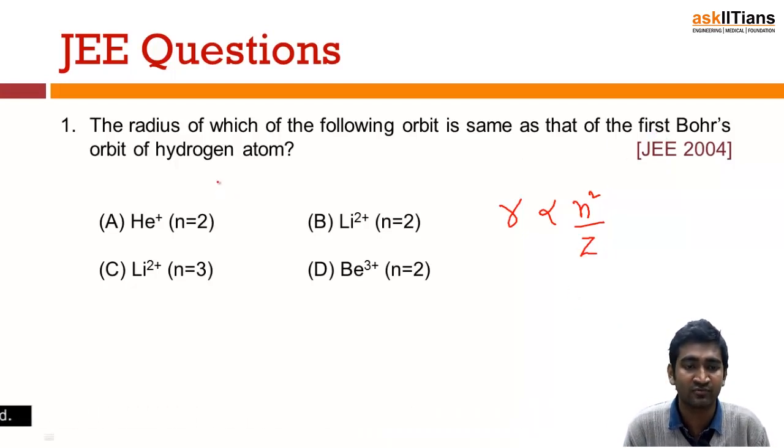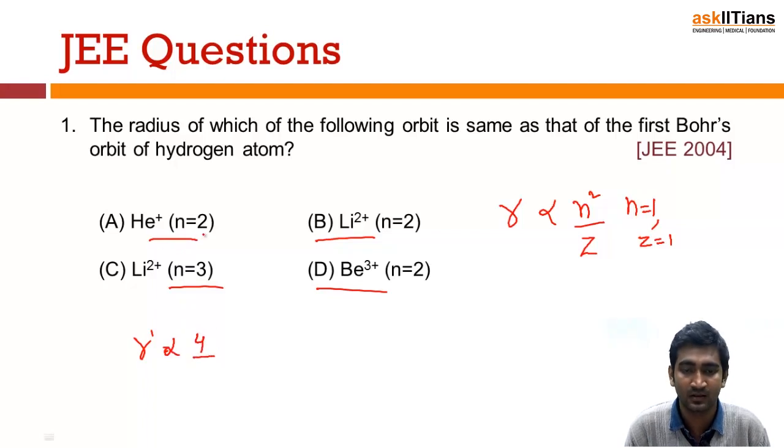If it's saying first Bohr orbit of hydrogen atom, that means you have to take n=1 and for hydrogen Z=1, means my R value should be 1 for any of these options. Now if you check individually, R dash for this will be proportional to n squared by Z, that means 4 by 2. The atomic number here is 2, so it will give 2, so that is incorrect.